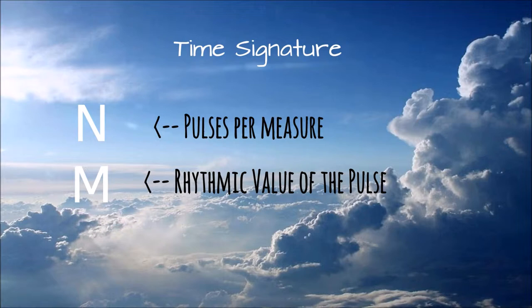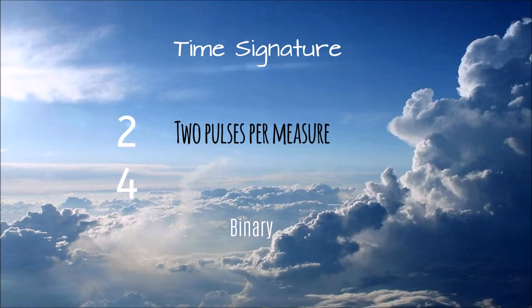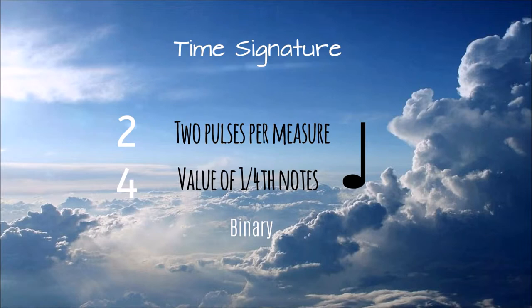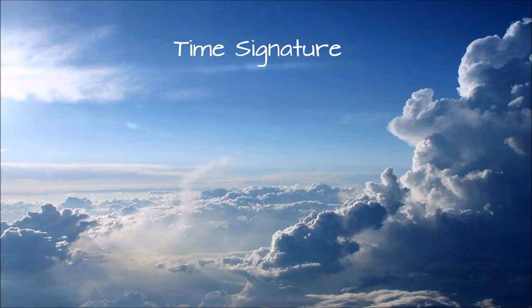Let's take as an example a binary time of two-fourths. The two represents how many pulses there are, while the four represents the rhythmic value, which in this case are quarter notes. Some examples of both binary and ternary beats will be shown.